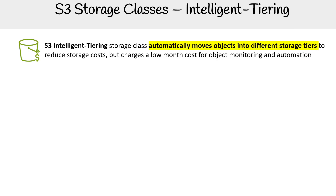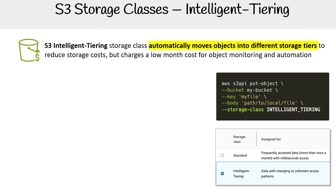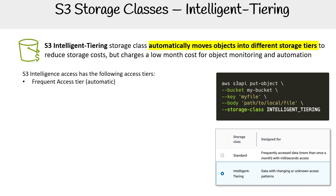S3 Intelligent Tiering storage class automatically moves objects into different storage tiers to reduce storage costs, but charges a low monthly cost for object monitoring and automation. You can choose this storage class via the API or via the console, and by default it will go into the frequent access tier. Notice that it says automatic, meaning these things are turned on automatically, and as soon as an object is in here, all these rules will start applying.